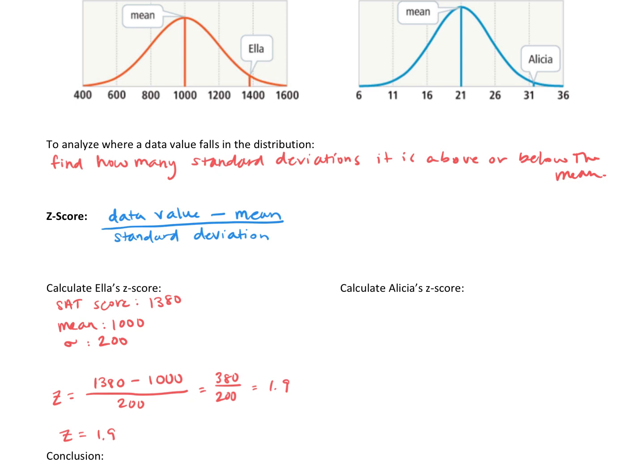For Alicia's z-score, she took the ACT. Her ACT score was 32. The mean of the ACT scores was 21, and the standard deviation is 5. To find her z-score, we take her score, 32, minus the mean, 21, divide that by 5. So 32 minus 21 is 11, divided by 5 is 2.2. Alicia's z-score is 2.2.